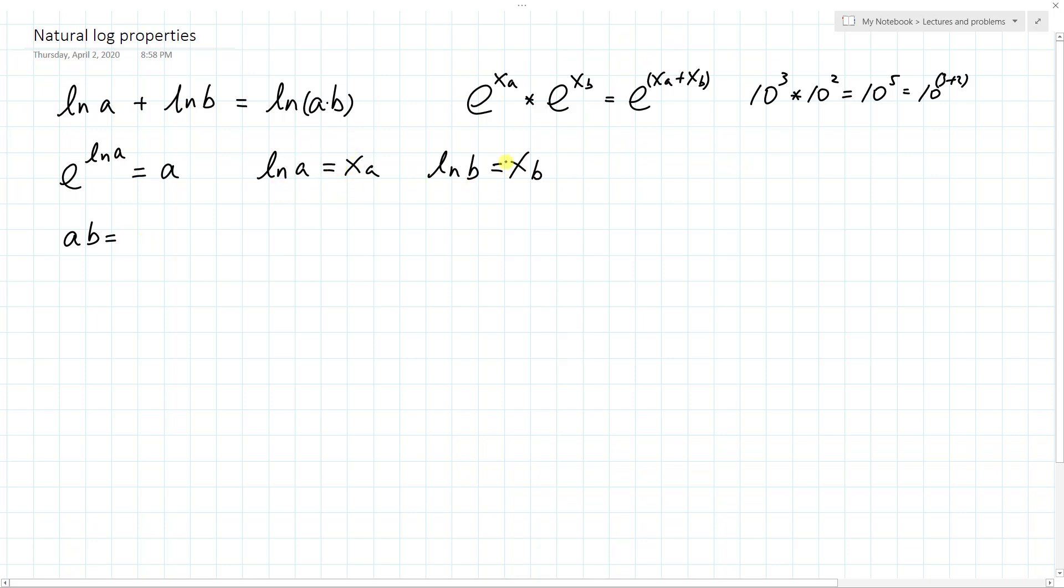So a times b. Because of these relationships, if you say e to the natural log a, that is taking the exponential function on the left side, and then you also have to do this. The right side also has to get that. And we know what this is. This is just a because of that function and its inverse function.